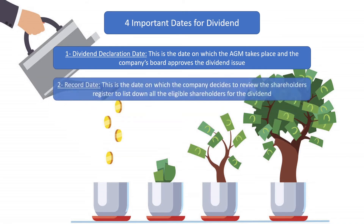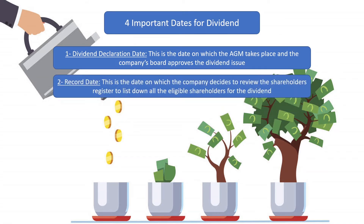The second is the record date. This is the date on which the company decides to review the shareholders register to list down all the eligible shareholders for the dividend. Usually, the time difference between the dividend declaration date and the record date is at least 30 days.